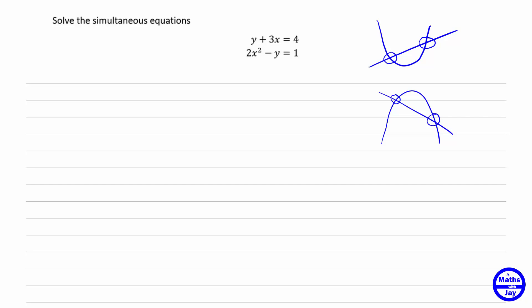They're not necessarily going to be two solutions, because you could have the situation where we've got a parabola and the line just touches the curve, so we could have one solution, or we could have a parabola and a straight line where they don't even meet at all, so it's possible to have no solutions. But given that this question says solve the simultaneous equations, it's quite likely that there will be at least one solution.